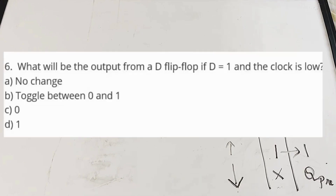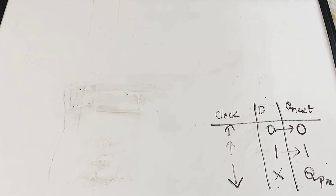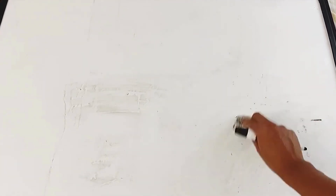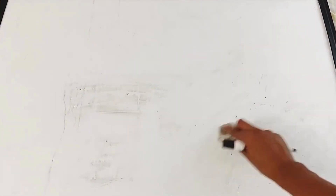Question six: what will be the output from a D flip-flop if D equals 1 and the clock is low? Options: A: no change, B: toggle between 0 and 1, C: 0, D: 1. The correct answer is A — no change — because whenever the clock is not rising or is low, the output will not change and remains the previous state.